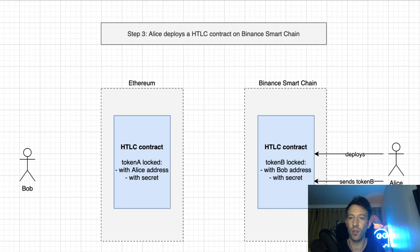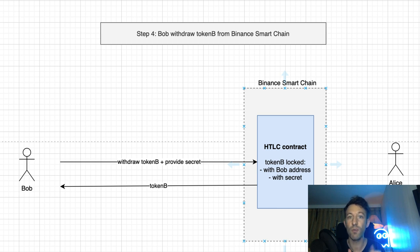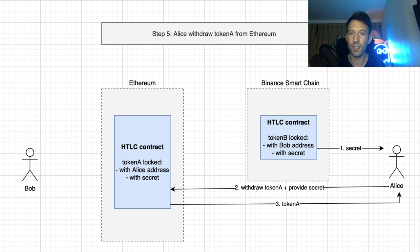Next, Alice will deploy another hash time lock smart contract on Binance Smart Chain and send token B to this contract. This HTLC contract is coded to release token B to Bob only if he knows the secret. Next, Bob is going to withdraw token B from the HTLC contract on Binance Smart Chain by using the secret he created. When Bob withdraws the token, the smart contract will also save the secret on the blockchain, which will reveal it publicly. Then Alice will read the value of this secret and use it to withdraw token A from the HTLC contract on Ethereum. And that's it — the atomic swap is completed.